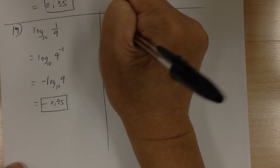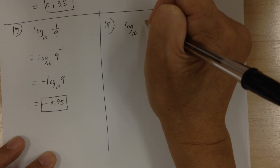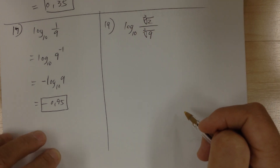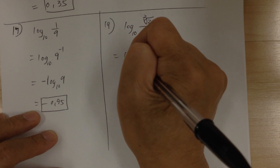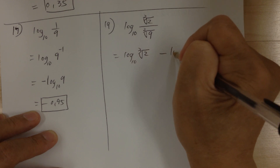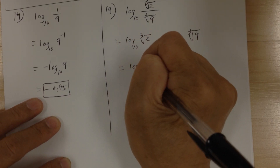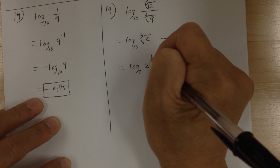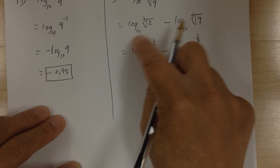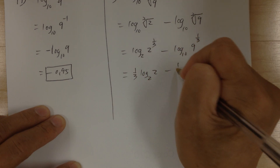Let's do number 19. Log base 10 of the cube root of 2 over the cube root of 9. I'm going to use the second log rule to separate the two parts: this equals log base 10 of cube root of 2 minus log base 10 of cube root of 9. Then make it into exponential form: 2 to the 1 third power and 9 to the 1 third power. Then the 1 third can come out.